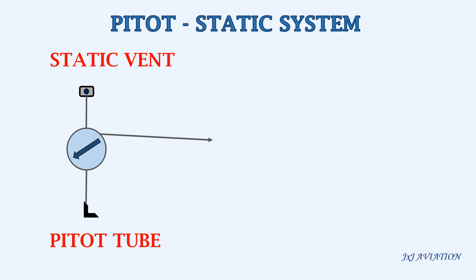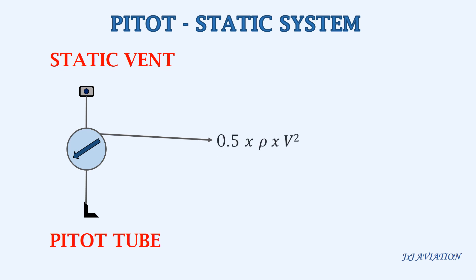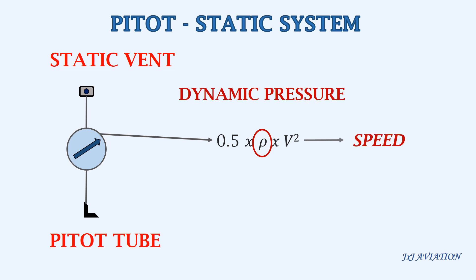On an aircraft, this subtraction is done by a pressure gauge by taking inputs from the pitot tube and the static vent. This gauge is calibrated according to the equation for dynamic pressure, and the needle moves based on the aircraft's speed. By giving a certain value for density, or rho, the speed can be calculated. This is called the indicated airspeed.